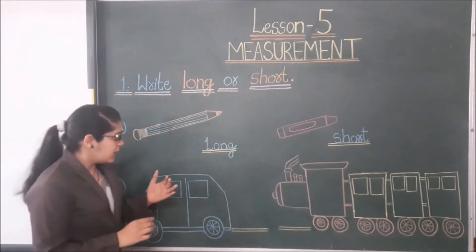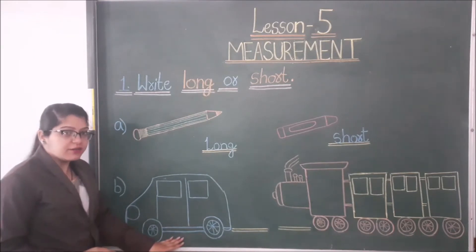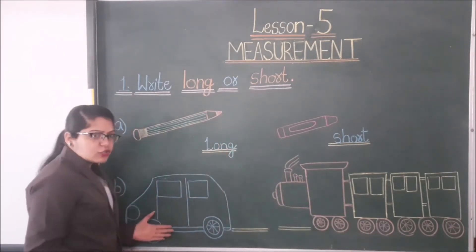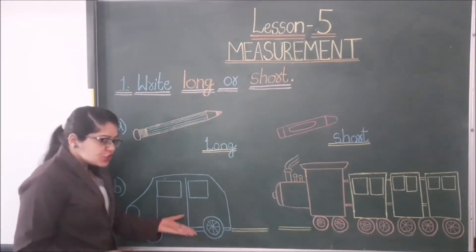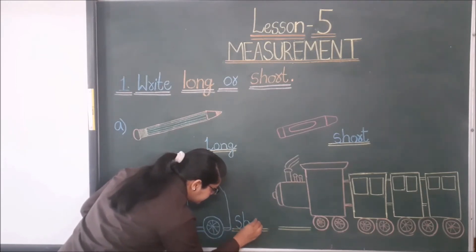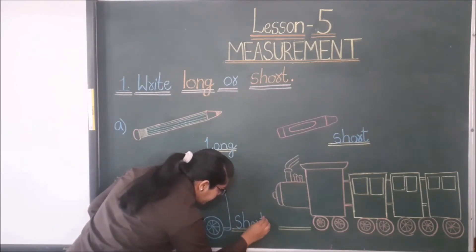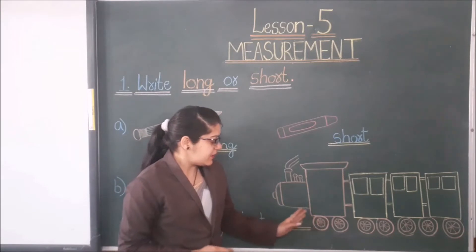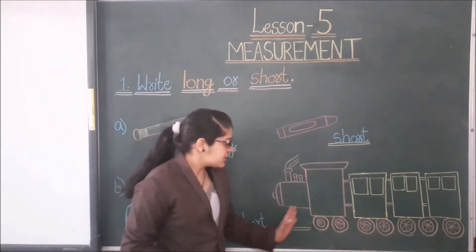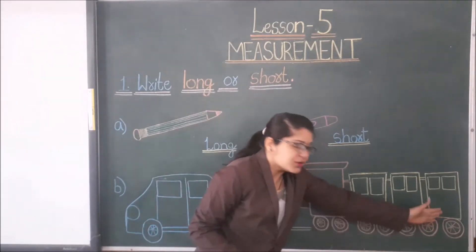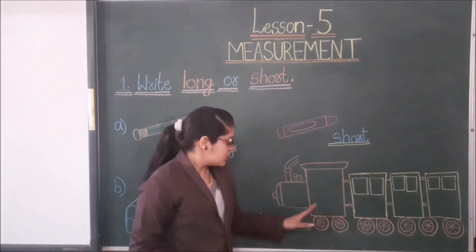Now let's see the next. This is a car and this is a train. This car is short, so here we write 'short'. This train is long, so here we write 'long'.